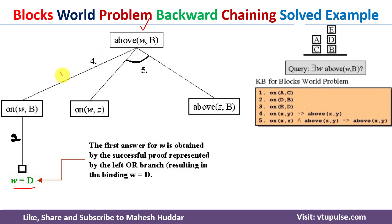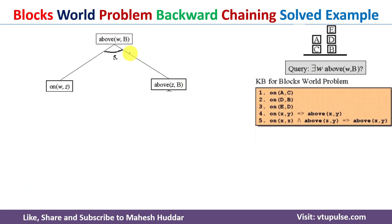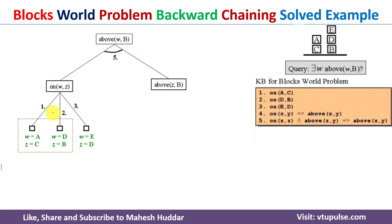Now we consider the right branch to find any other blocks above b. We start with on(w, z), where both w and z are variables. Rules 1, 2, and 3 are all applicable since both are variables. In the first case w=a, z=c; in the second case w=d, z=b; in the third case w=e, z=d.